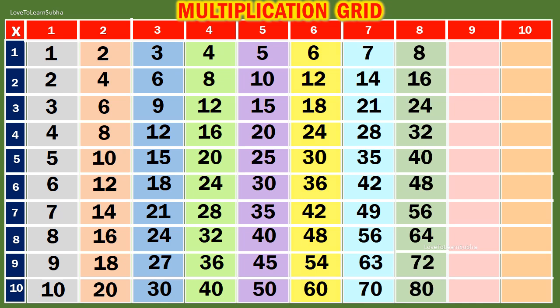Table of 9. 9 1s are 9. 9 2s are 18. 9 3s are 27. 9 4s are 36. 9 5s are 45. 9 6s are 54.